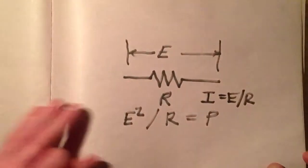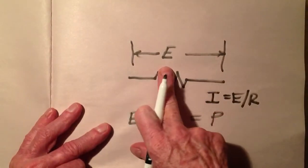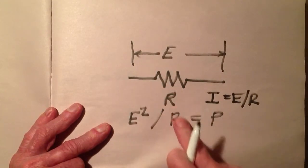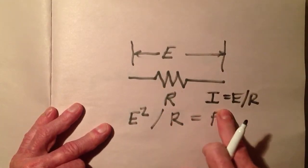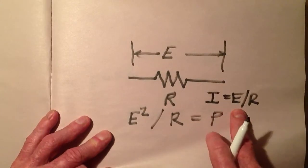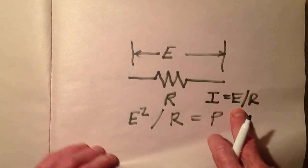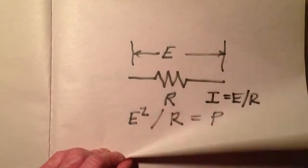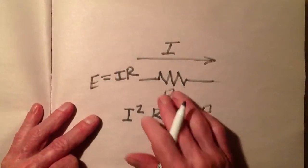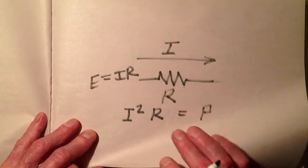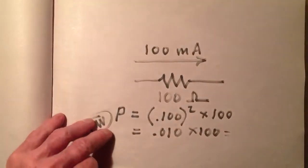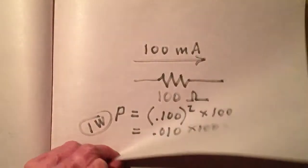Remember: if you know the voltage across a resistor and you want to find out what the current is, you can use Ohm's Law — current in amps equals voltage in volts divided by resistance in ohms. You can use either formula in either case, one of them indirect and one of them direct. Of course, it's always easier to do it directly.